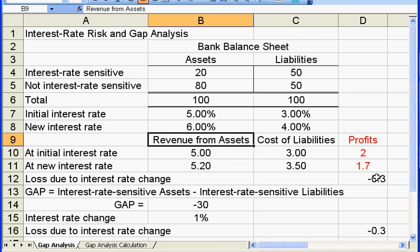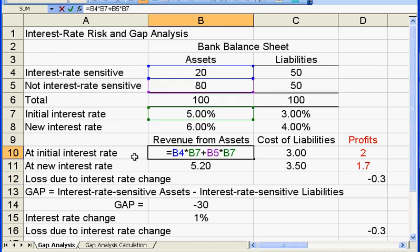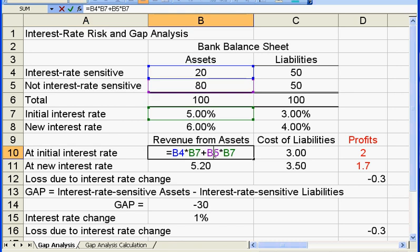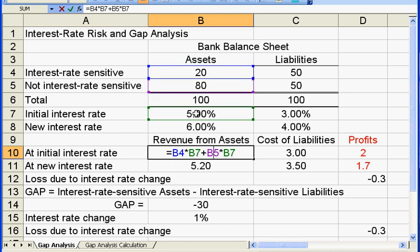Let's first look at this change in the profit after a rise in the interest rate. The revenue at the initial interest rate is calculated from this 5%, the same 5% times both the interest rate sensitive assets, $20 here, and the interest rate insensitive assets, $80 here. That is $5.